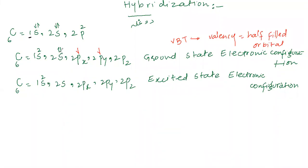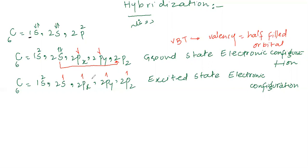When the electron jumps into 2Pz, we call it the excited state of electronic configuration. For the 2S orbital, you can have the electrons in either spin direction. But for the three degenerate P orbitals, the direction of spin must be the same, because their energy is the same.